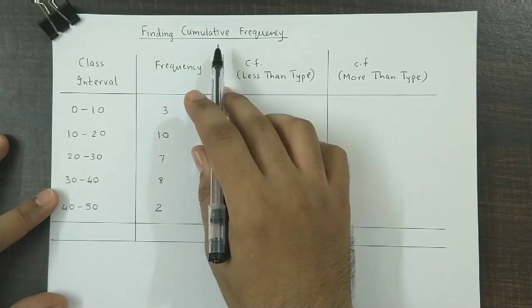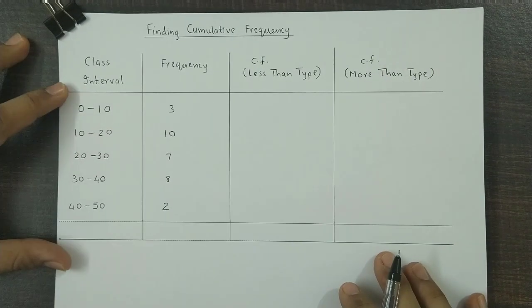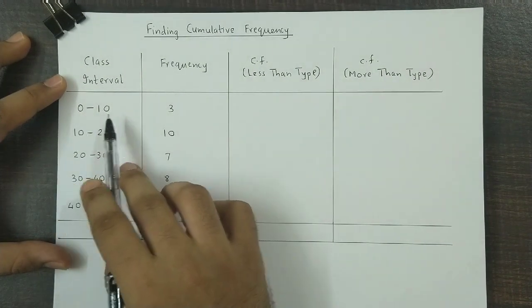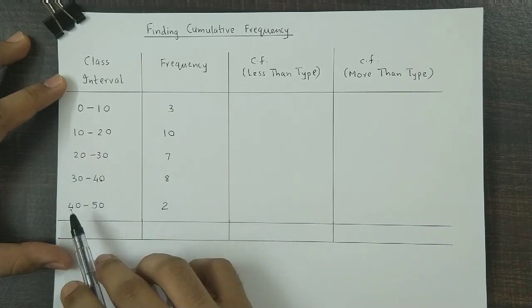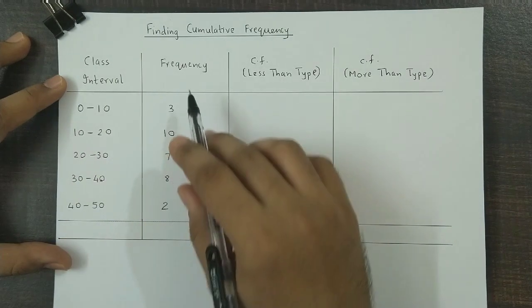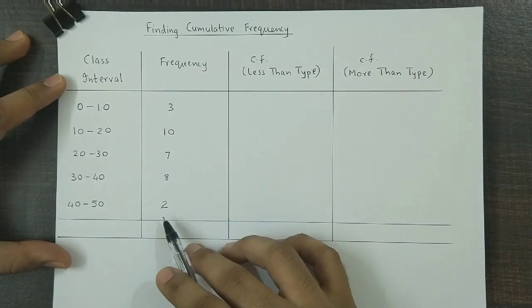Now suppose we have class intervals 0 to 10, 10 to 20, 20 to 30, 30 to 40, 40 to 50, and the corresponding frequencies are 3, 10, 7, 8, and 2.